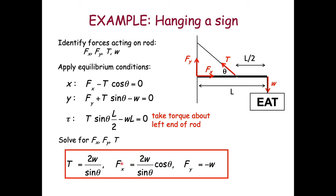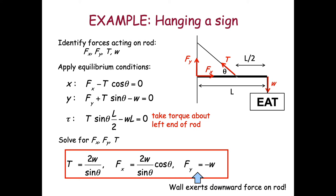Substituting T = 2W/sin(θ): F_x equals T cos(θ) = 2W cos(θ)/sin(θ). For F_y: negative W plus T sin(θ) equals negative W plus 2W equals W, so F_y equals negative W. The wall therefore exerts a downward force on the rod.